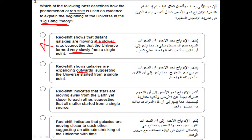Option B says redshift shows galaxies are expanding outwards, suggesting the universe started at a single point — this makes sense. Option C says stars are moving away from Earth yet closer to each other, suggesting all matter started from a single point — but they are not moving away from Earth only, so this is wrong. Option D says galaxies are moving toward each other suggesting shrinking — shrinking is wrong, there should be expansion. So option B is the correct answer.